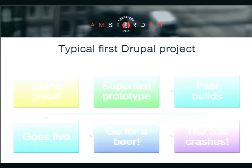The typical first Drupal project or first few Drupal projects happen like this: the project starts great because Drupal is in our hands, we propose Drupal to the client, we do very fast prototypes and fast builds using all the tools of Drupal, we hack something, make something work, do workarounds, the project goes live, we go for a beer — and at midnight we receive a call from an angry client that the site has crashed.